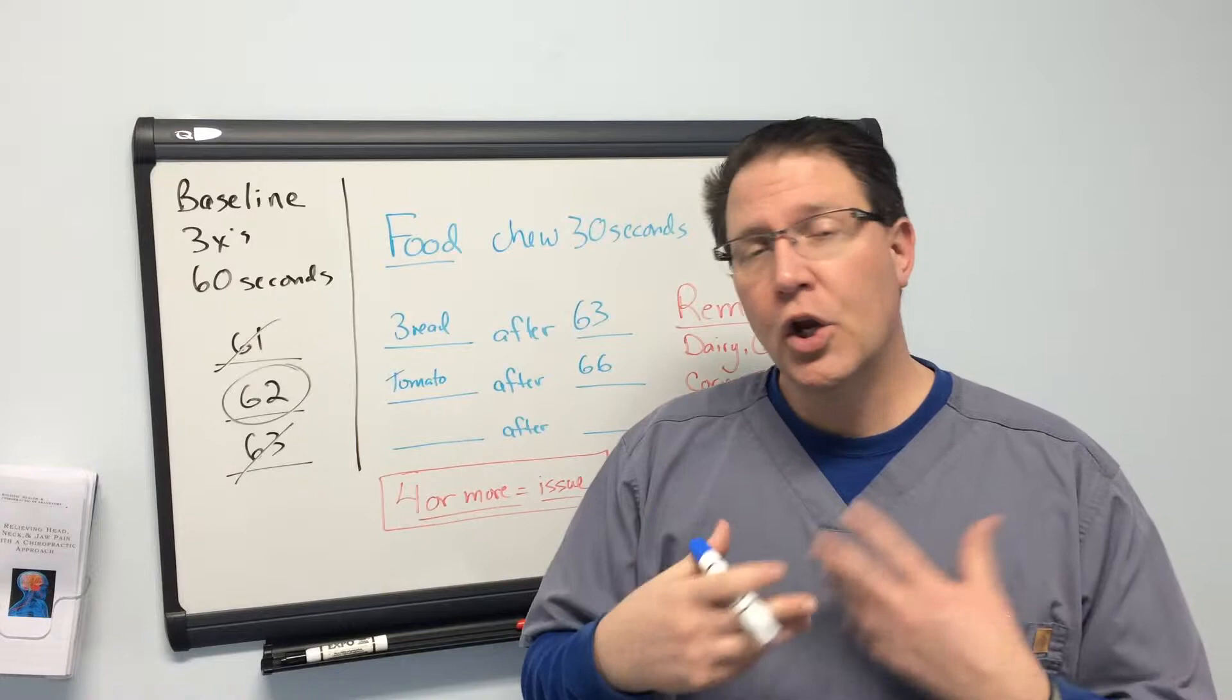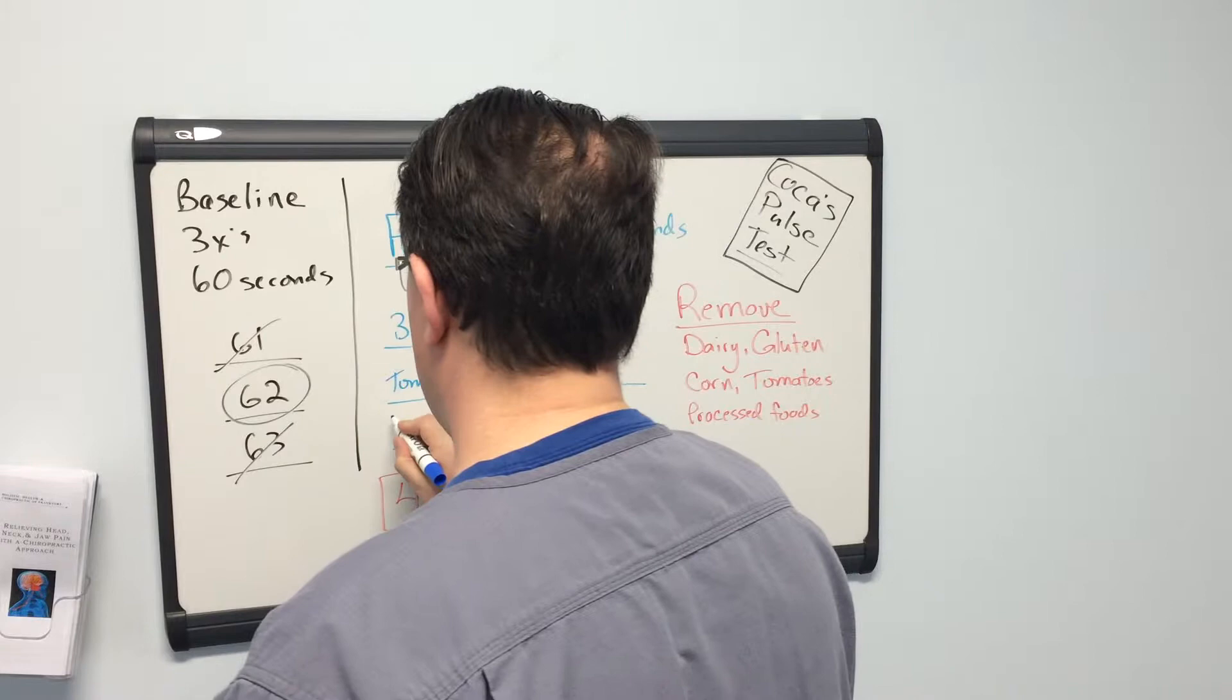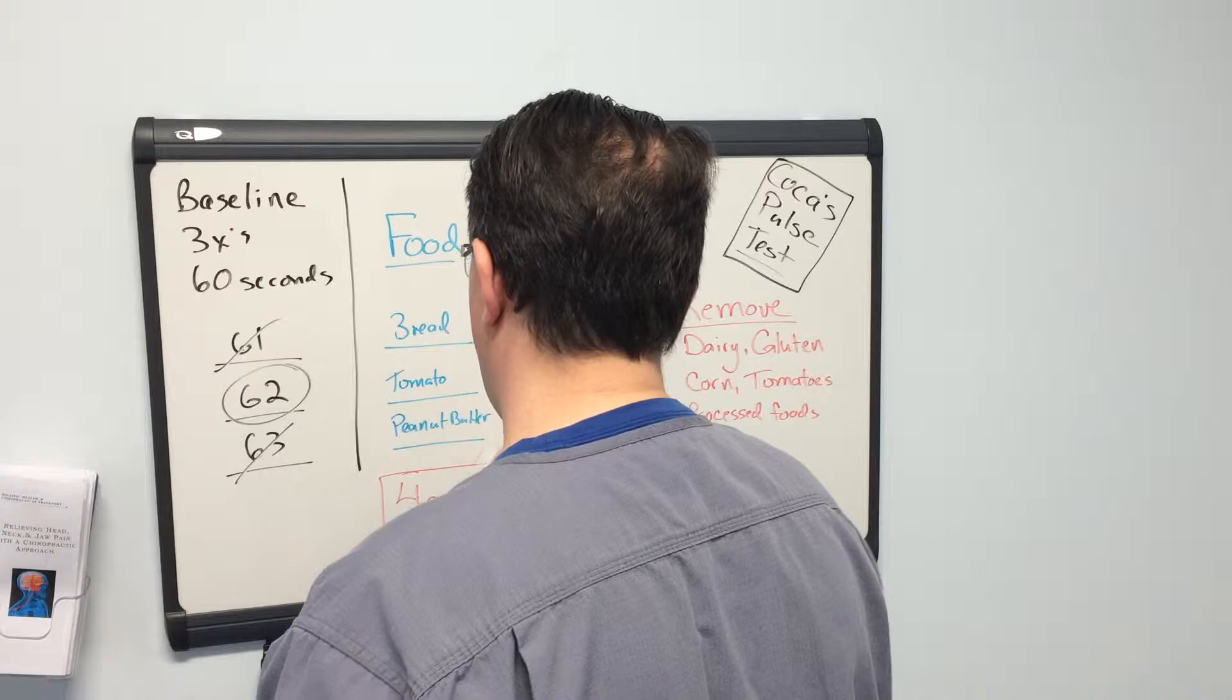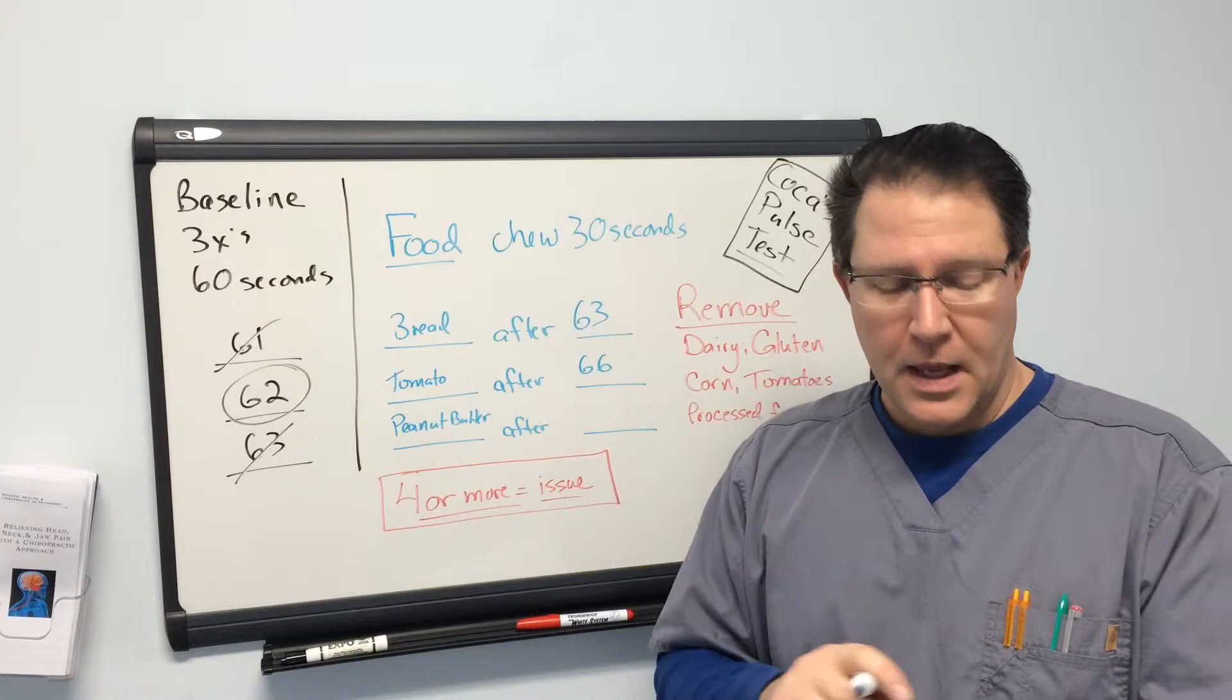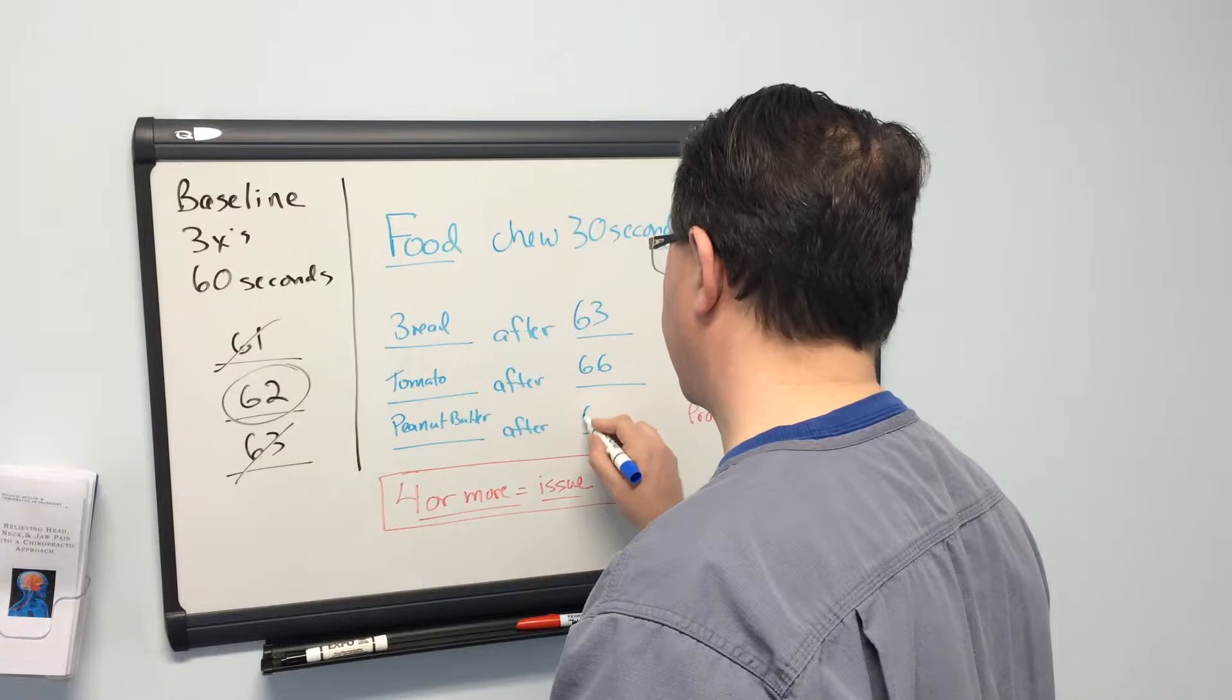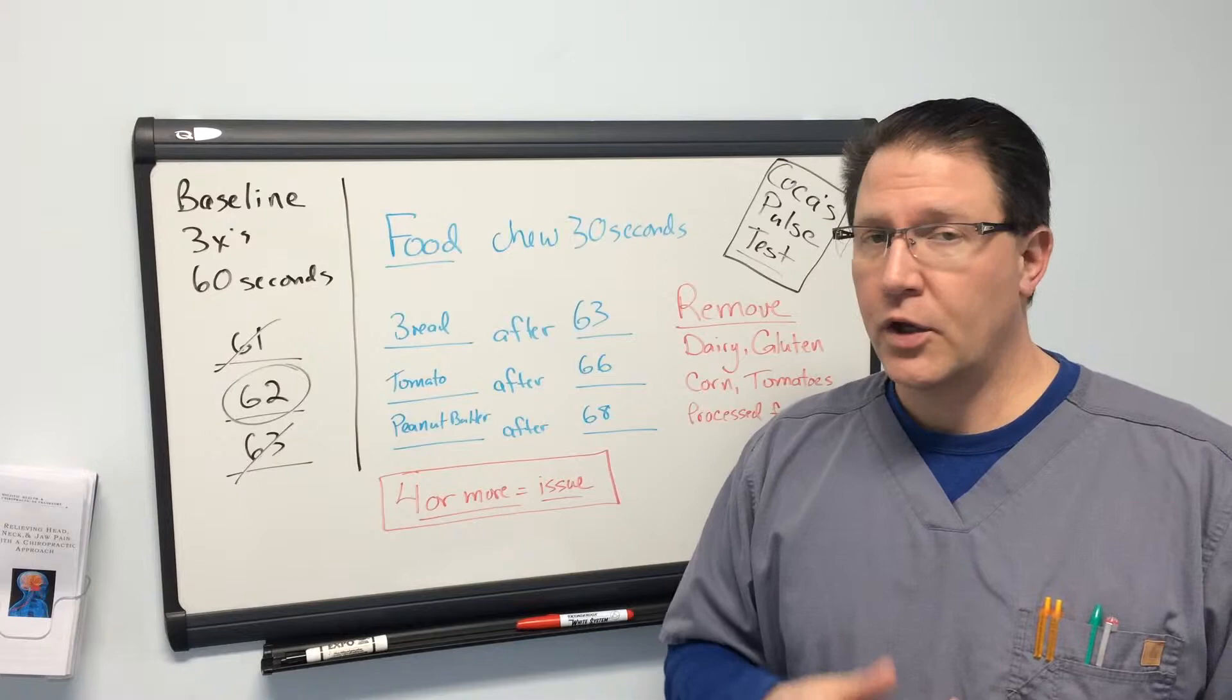You're going to spit that out, you're going to take some water, you're going to clean out your palate, and you're going to try another food. And let's try peanut butter. And again, you keep that in your mouth for 30 seconds, chew it up, and then you're going to check your pulse for another 60 seconds. And let's say you come in at 68.